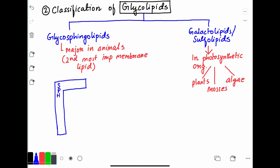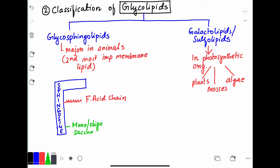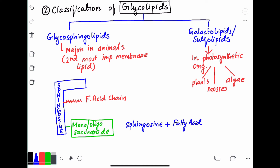The basic structure of glycosphingolipids: as the name suggests, a sphingosine backbone is present. To the sphingosine is attached a fatty acid chain. The third component is a mono- or oligosaccharide. The sphingosine backbone together with the fatty acid chain is known as ceramide — I will use this term later in the explanation.